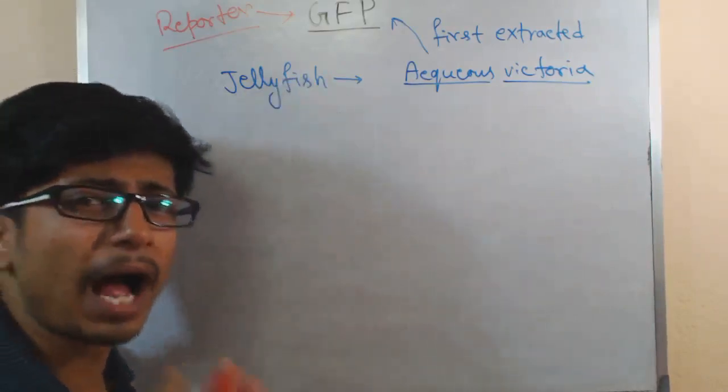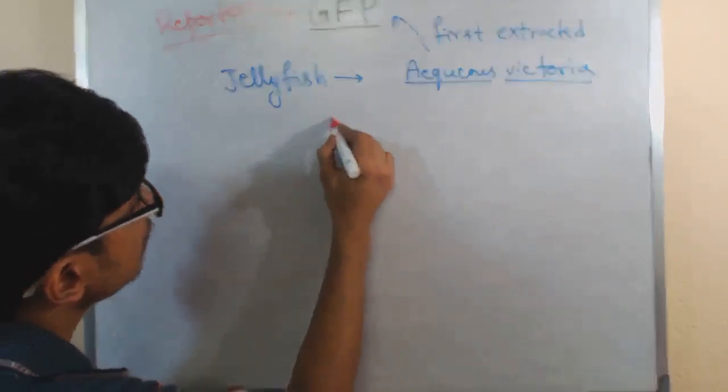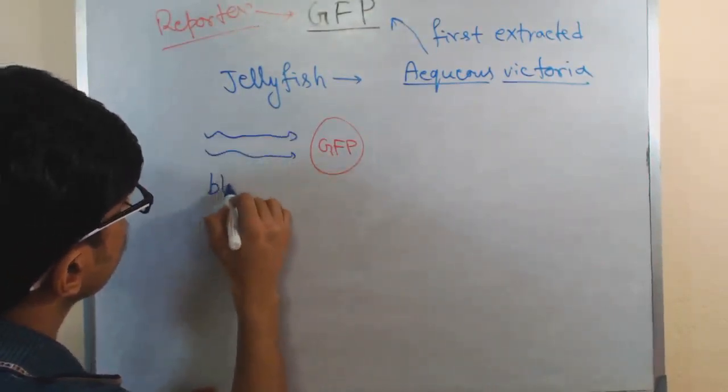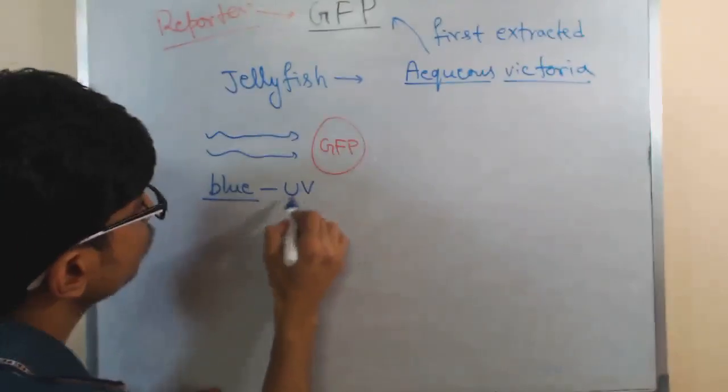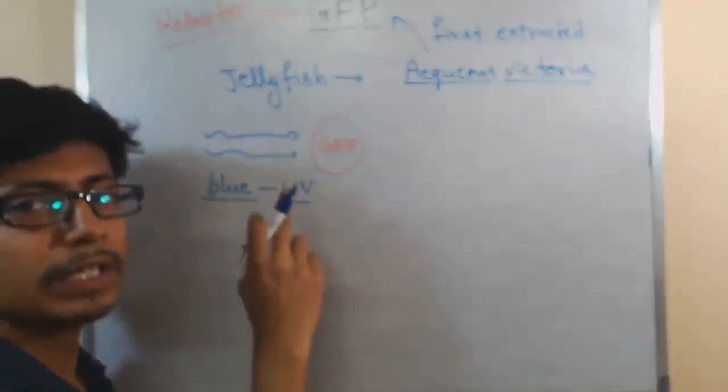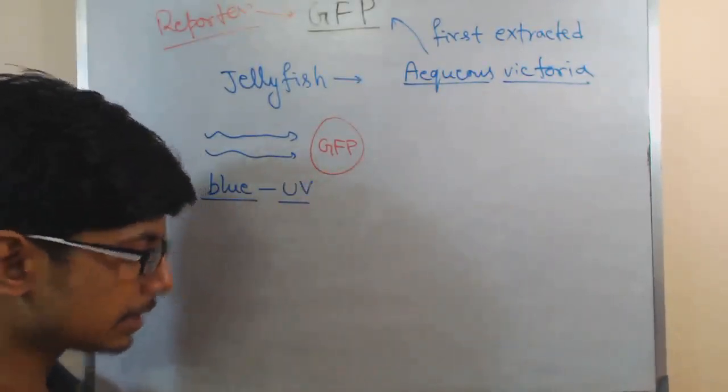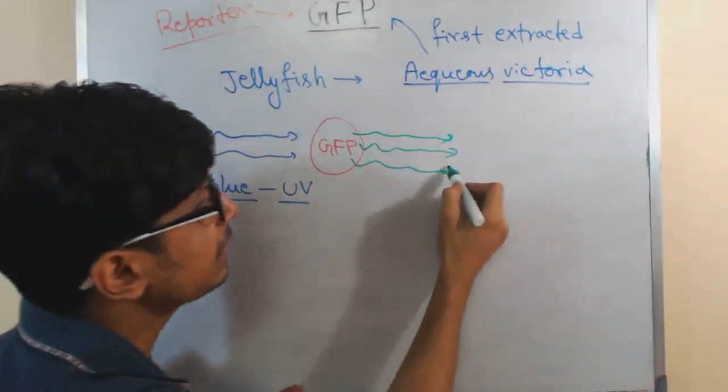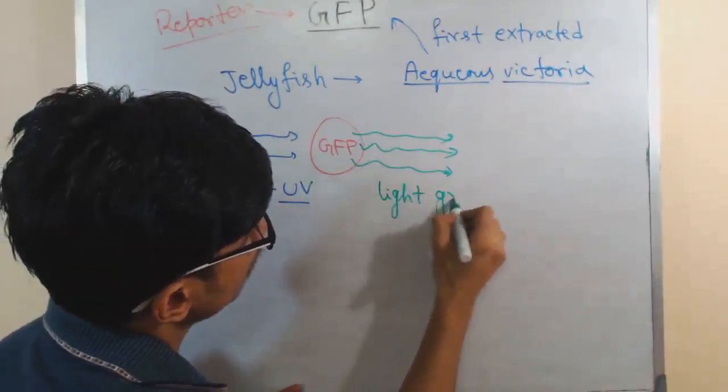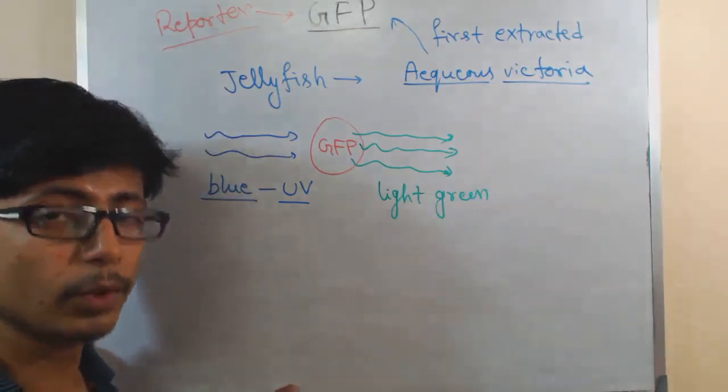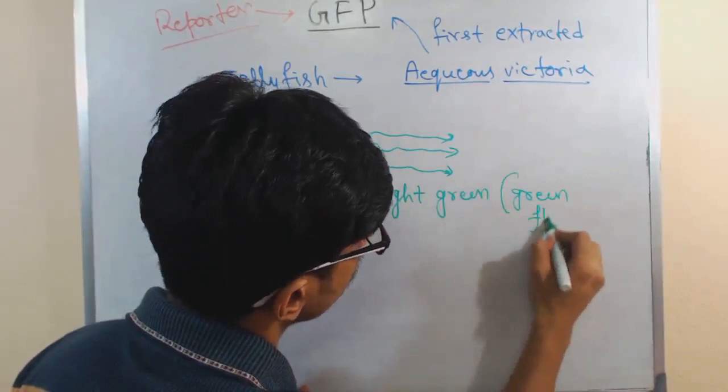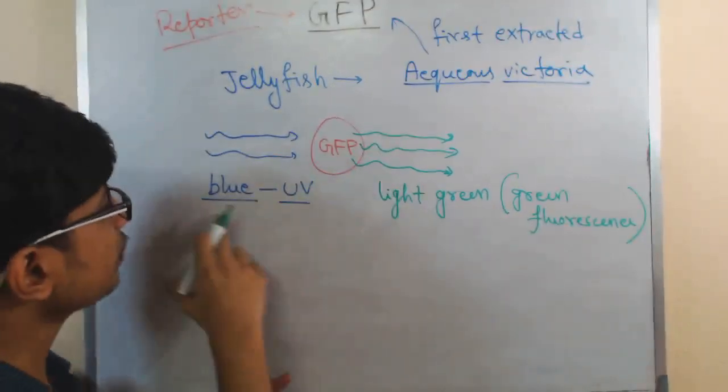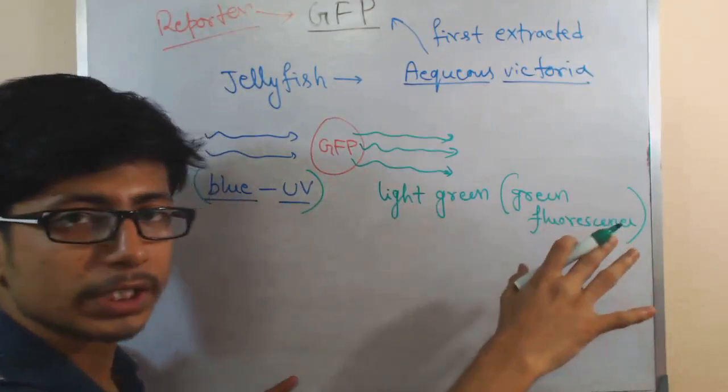So, the idea about GFP here, how exactly this works, we do not know. But the thing is, let's say this is the GFP protein. GFP protein gets excited due to blue light, blue to UV range of light. Upon getting excited, GFP releases the light range of green, which is very bright, light green emission of light fluorescence. This is the green fluorescence that we observe. That is the function of GFP: gets excited from the blue to UV range of light, releases green fluorescence that we can visualize.